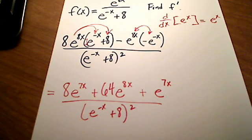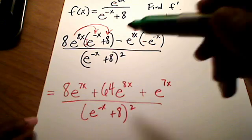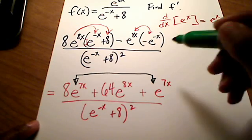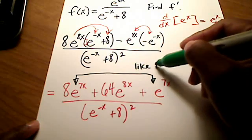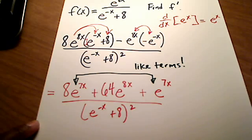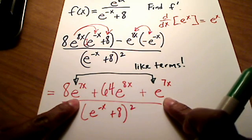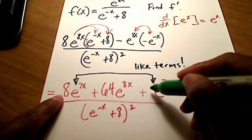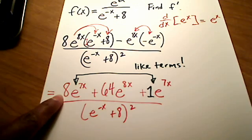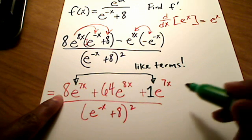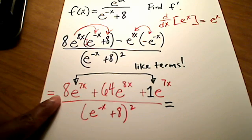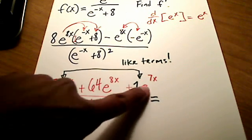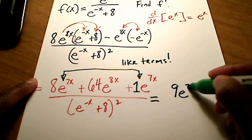And this is all over my quantity of e to the negative x plus 8 squared. Now, do you notice one more thing? These two terms right here are alike. These are what we call, in algebra, like terms. What makes them alike? Well, they're alike because they have the same base. They both have an e to the 7x. It's easy to see the coefficient in front of this term is an 8, but the coefficient in front of that term is really just a 1. So we could add these two up together, and we come up with the final answer of 8e to the 7x plus 1e to the 7x is 9e to the 7x.